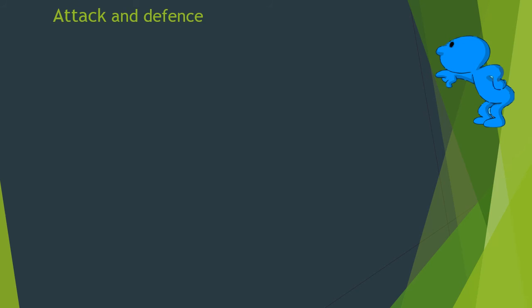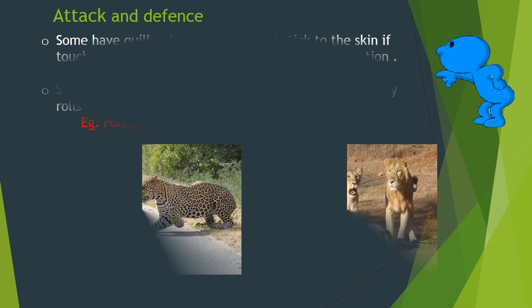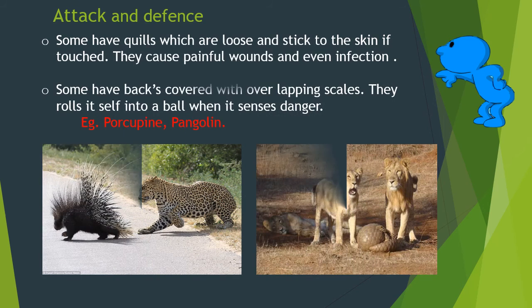Some animals have quills which are loose and stick to the skin if touched. They cause painful wounds and even infection. Some have their back covered with overlapping scales — they roll themselves into a ball when they sense danger. For example: porcupine, pangolin.